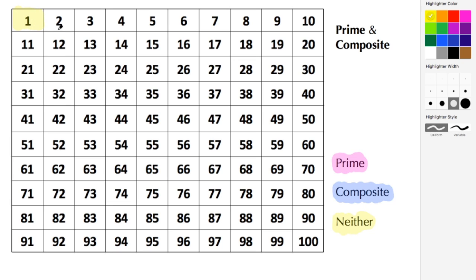When we look at the number 2, the number 2 can be divided by 2 and 1. That makes it prime because it has exactly two factors. The number 3 can be divided by 3 and 1, again exactly two factors. The number 4 is composite; it can be divided by 4, 2, and 1. The number 5 is prime; it can be divided by 5 and 1.